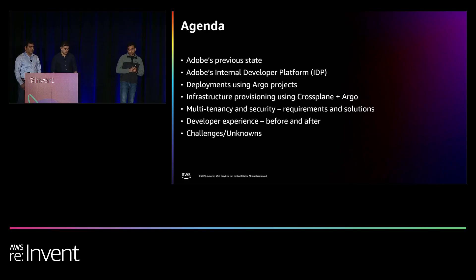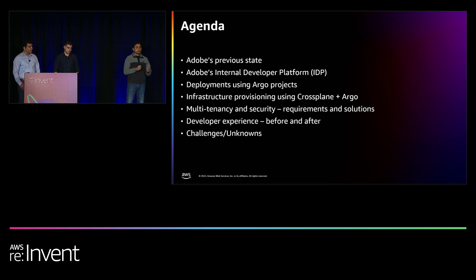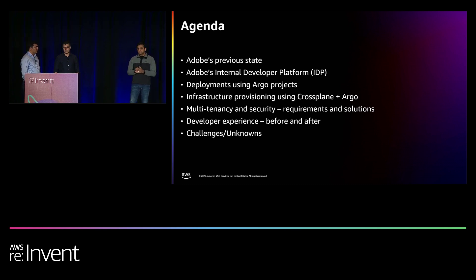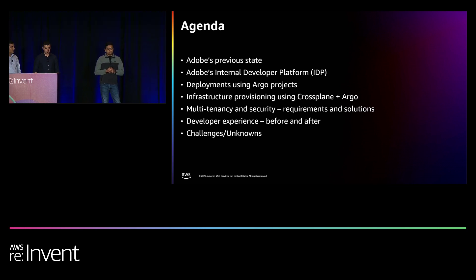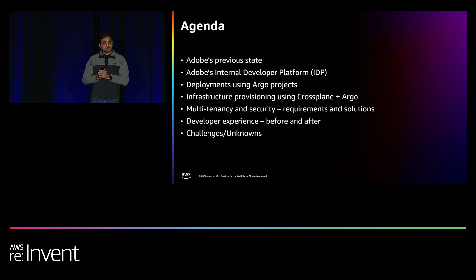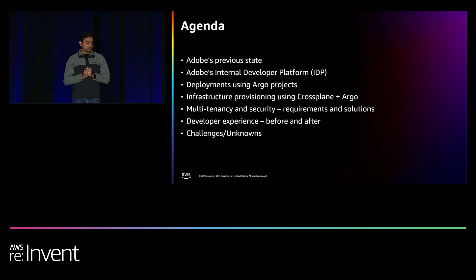We have a packed agenda today. We are going to talk about Adobe's previous state, how it looks and the pain points associated. Then we're going to do a quick overview of Adobe's internal developer platform, followed by a deep dive into deployments using Argo projects and also infrastructure provisioning using Crossplane and Argo. Thereafter, Gaurav is going to take you into multi-tenancy and security requirements. And finally, we'll talk about comparing the before and after experiences for our service teams and platform teams, and also some of the challenges and unknowns we still have.